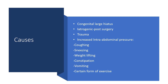What are the causes? A congenitally large hiatal opening makes it likely we will develop hiatal hernia. Iatrogenic causes — that is post-surgery or trauma. Increased intra-abdominal pressure can push the contents of the gastrointestinal tract through any openings. This includes: coughing for a long time, sneezing for a long time, heavy lifting, constipation, vomiting, and straining due to other factors.